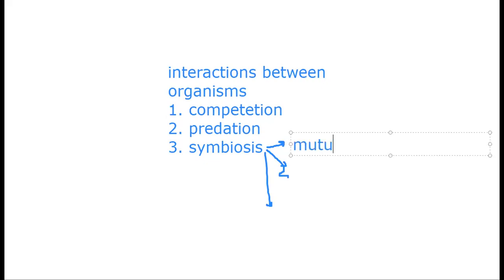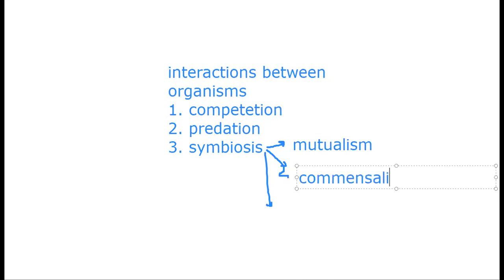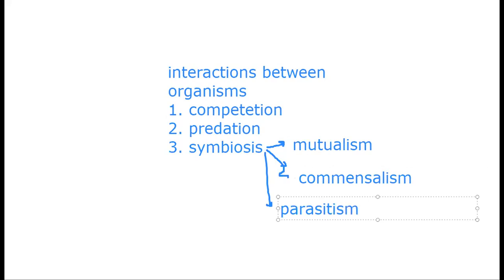The interactions between organisms — you can say there are five: competition, predation, mutualism, commensalism, and parasitism. Or you can say there are three: competition, predation, and symbiosis. But you have to know that symbiosis is divided into three types: mutualism, commensalism, and parasitism.